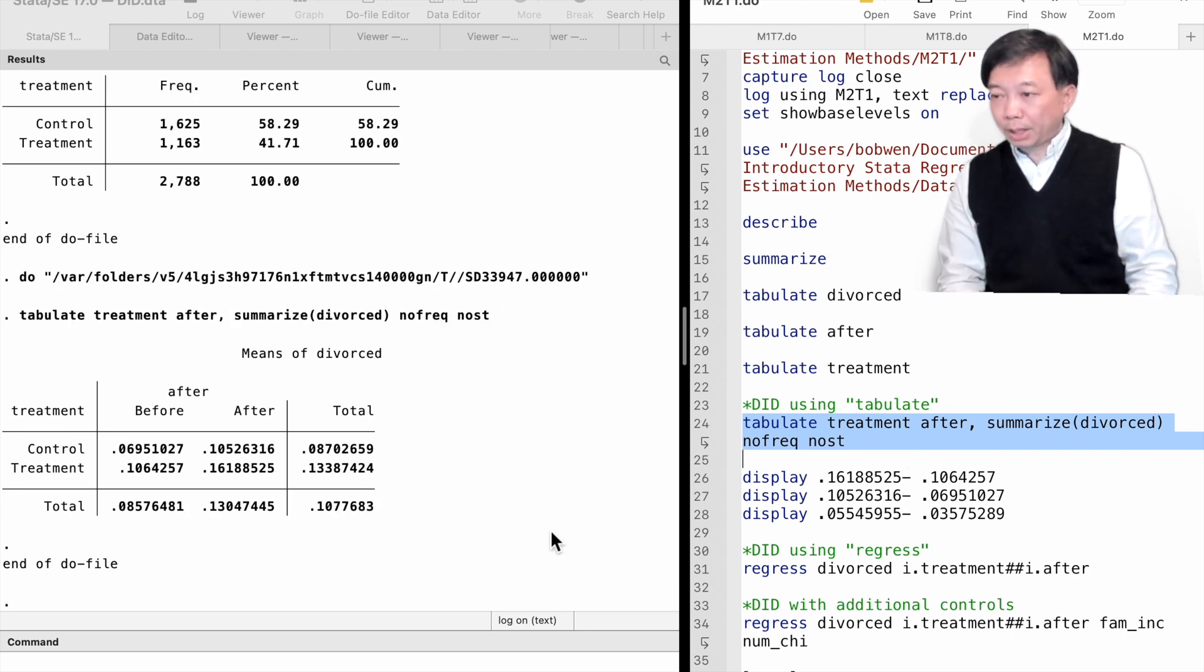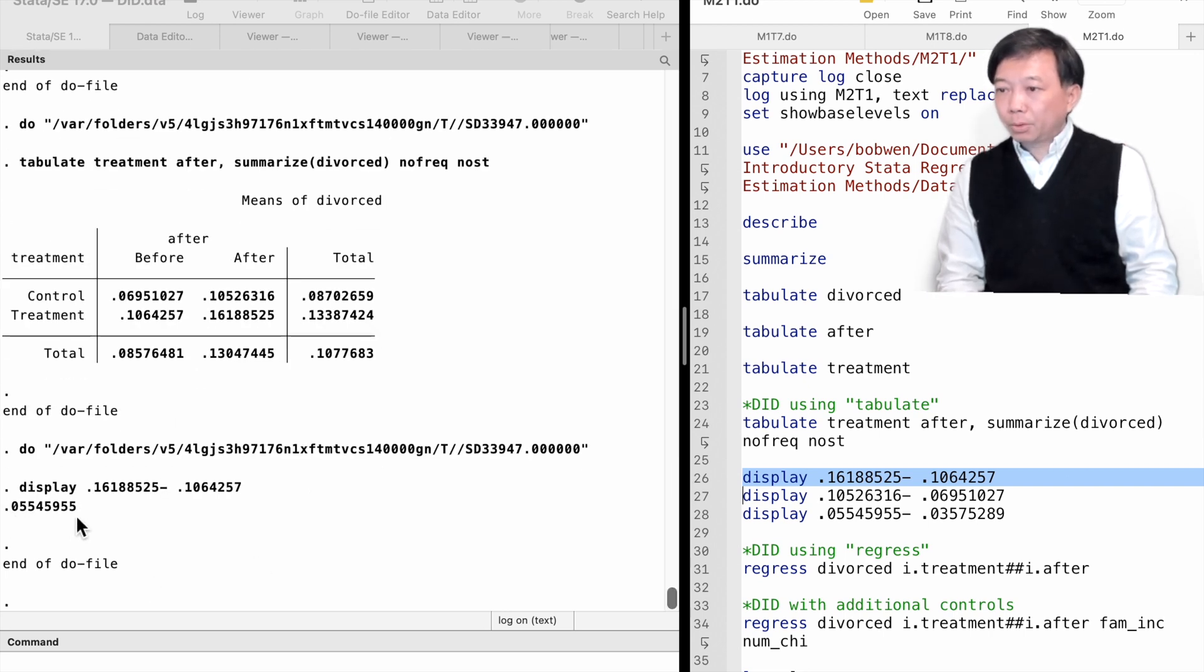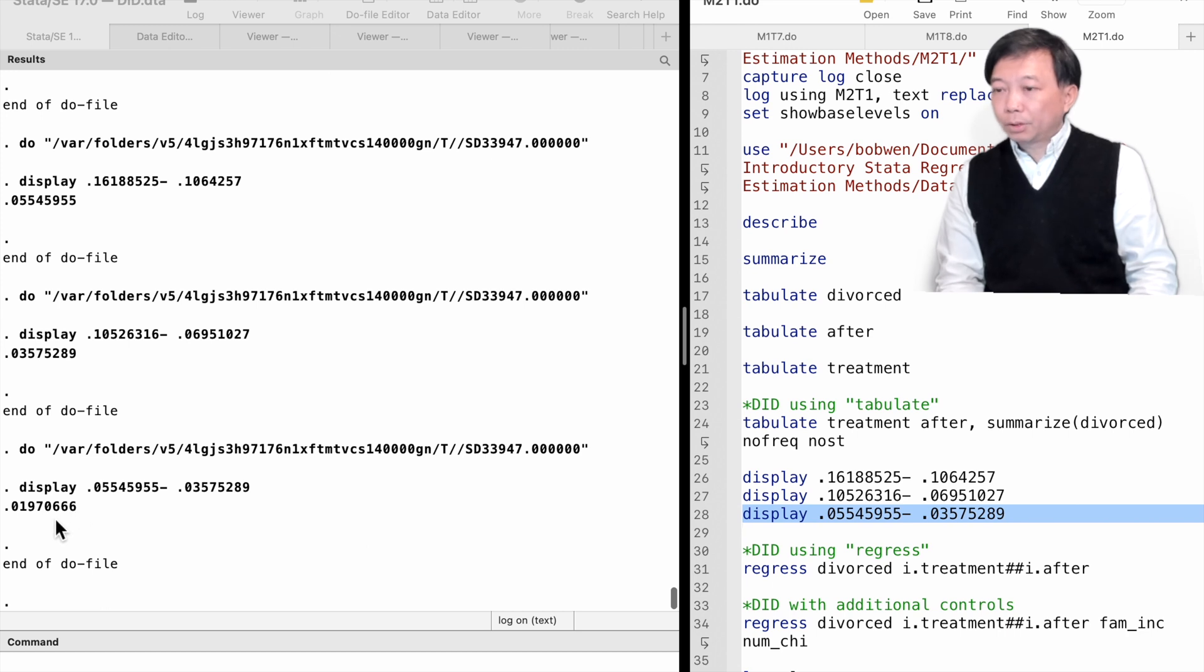Here, we have the two-by-two table of the basic difference in differences estimates. We see that for the treatment group, Indiana, the average divorce probability increases by 5.5 percentage points from 10.6 to 16.2. On the other hand, for the control group, Illinois, the divorce probability increases by around 3.6 percentage points. So, the difference in differences estimate is around 2 percentage points. In other words, the no-fault divorce law enforced in Indiana actually raises the divorce likelihood by 2 percentage points after we account for the trend of the divorce rate due to reasons other than the law.